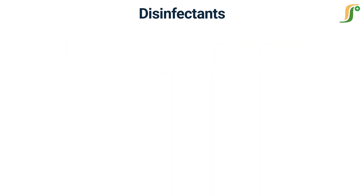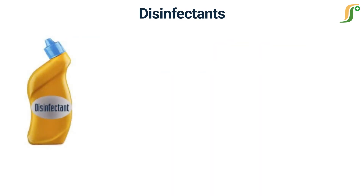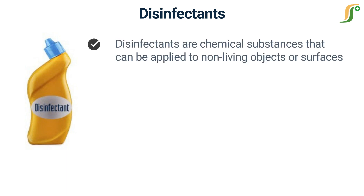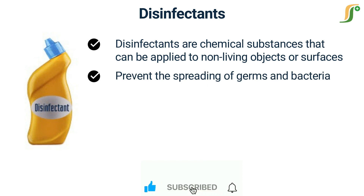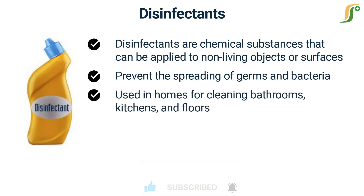First of all, let us know about the disinfectants. Disinfectants are chemical substances that can be applied to non-living objects or surfaces to inhibit the growth of microorganisms. They prevent the spreading of germs and bacteria to people by sterilizing the surfaces where they are applied. Disinfectants are largely used in homes for cleaning bathrooms, kitchens, and floors. Some disinfectants such as hydrogen peroxide are used in healthcare facilities and hospitals to clean surgery tools and rooms.